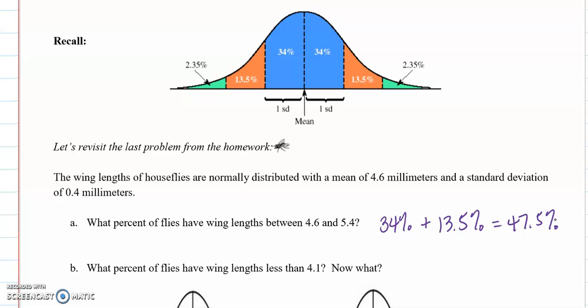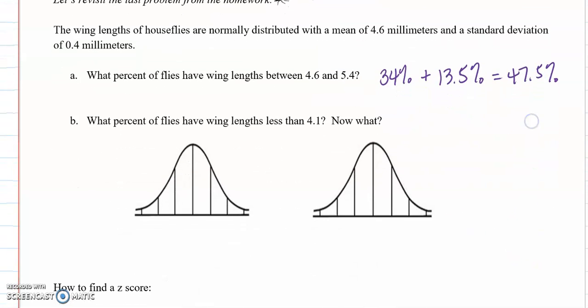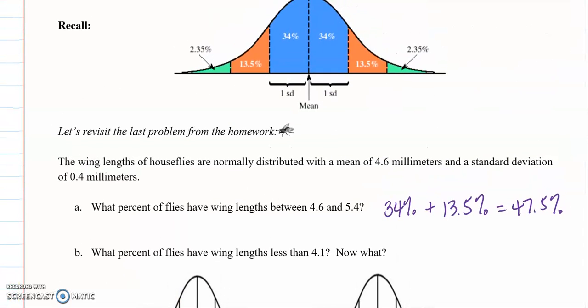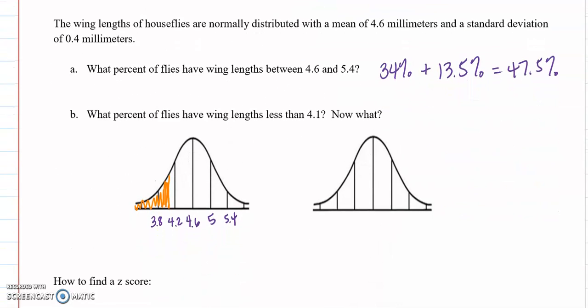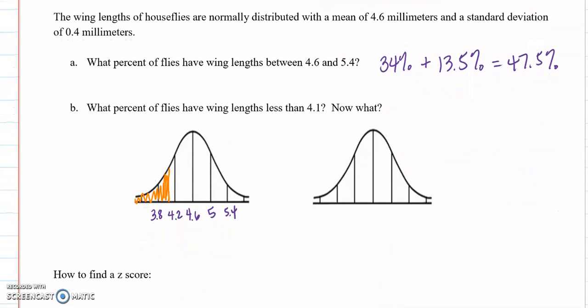Part B, what percent of flies have wing lengths less than 4.1? And if we take a second and draw the situation, we're talking about a value that is less than 4.1, but 4.2 is our mark that corresponds with that graph that we understood all the percentages about. So what today is about is extending the idea and being able to find percentages when it doesn't fit perfectly into that within one standard deviation or within two standard deviations or three standard deviations.